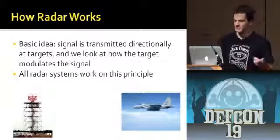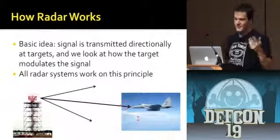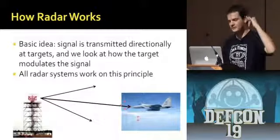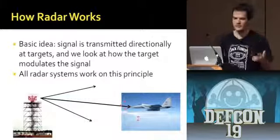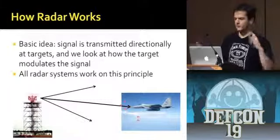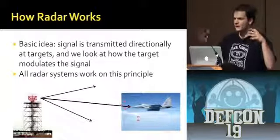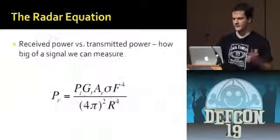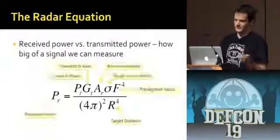The basic idea is we transmit a signal and we get some kind of return off of it. So this is an aviation system — basically what it's doing is spinning around, sending out a pulse and measuring how long it takes to come back. You could do a lot of processing with that return signal. The key point is that every radar system works on this type of principle: you're transmitting a signal from somewhere and looking at how that reflects off of a target. This is all governed by something called the radar equation.